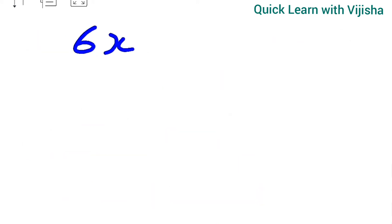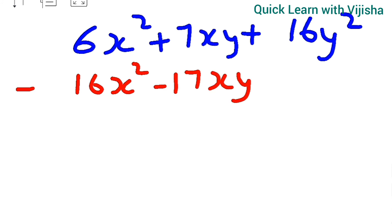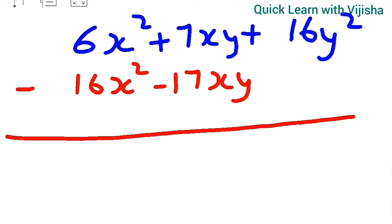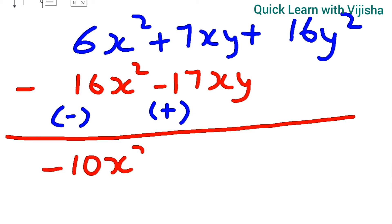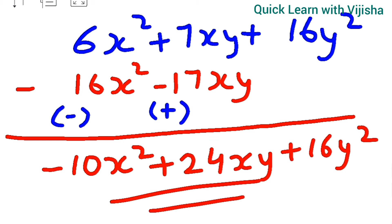Vertical method for the fourth question: write 6x² plus 7xy plus 16y², subtract 16x² minus 17xy below. There is no y² term in the second expression. Change signs: 16 becomes minus 16, minus 17 becomes plus 17. So 6 minus 16 gives minus 10x², plus 7 plus 17 gives plus 24xy, and plus 16y² stands alone — the same answer.